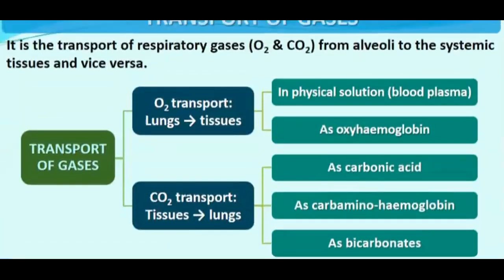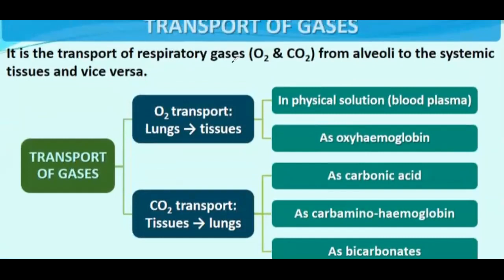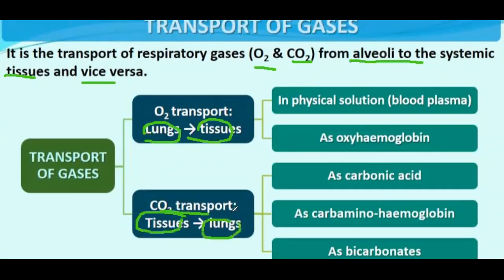Transport of gases refers to the transport of respiratory gases — oxygen and carbon dioxide — from the alveoli to the systemic tissues and vice versa. The transport takes place in two parts: first, oxygen transport from the lungs to the tissue, and second, carbon dioxide transport from the tissues to the lungs. It is the same blood — first oxygenated, then deoxygenated.